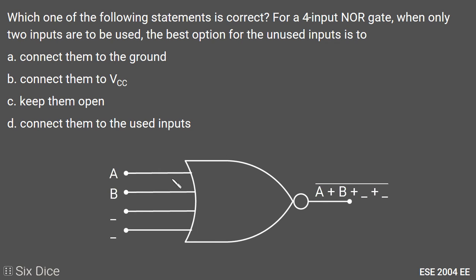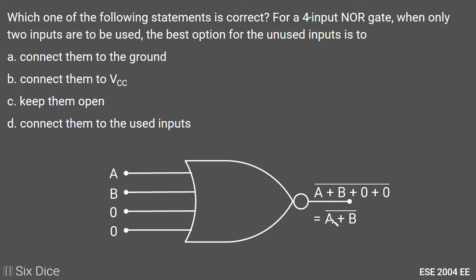Option A: Connect the unused inputs to ground, so those two inputs become 0. The NOR gate input is A, B, 0, 0, and the output is the complement of A plus B plus 0 plus 0. Adding 0 in Boolean algebra doesn't change anything, so the output becomes the complement of A plus B. The output depends on our inputs A and B.